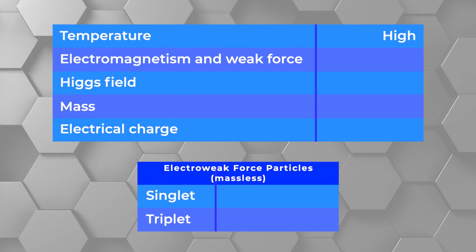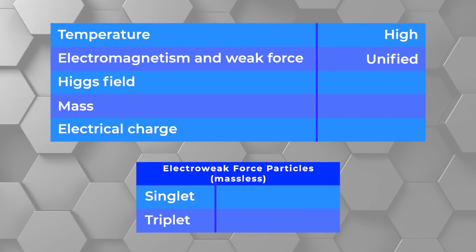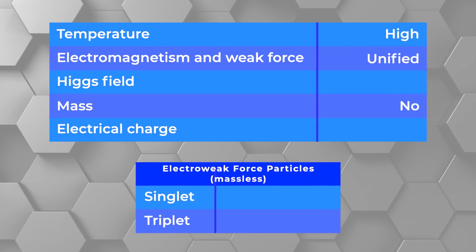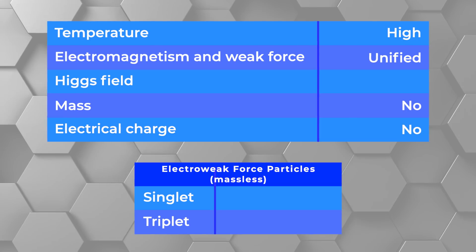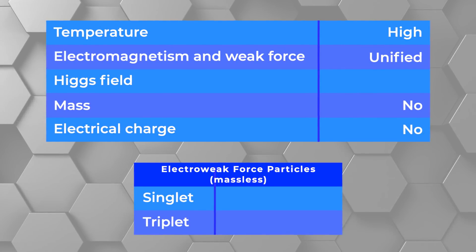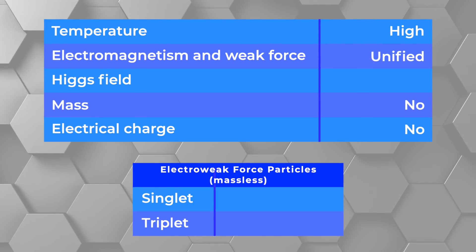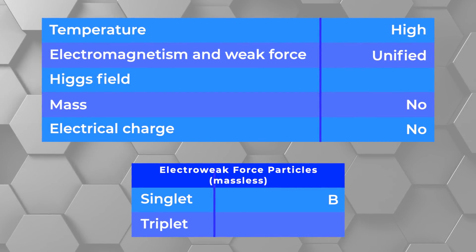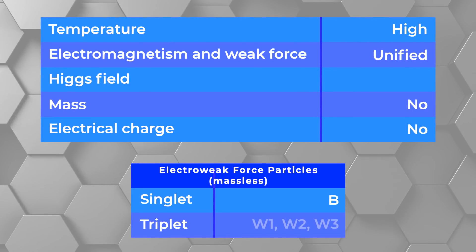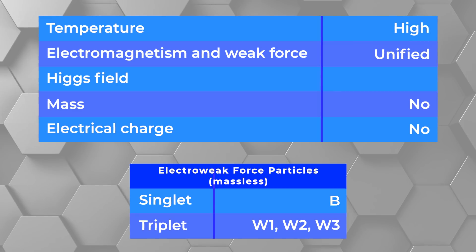Now for the electroweak force. There is a temperature above which the electromagnetic and weak force seem to be the same. Under these circumstances, mass doesn't exist. Even weirder, electrical charge doesn't exist. Instead, the electroweak force has two sets of massless force carrying particles. A single particle called a singlet and which we'll call a B, and a trio of particles called a triplet and which can be called W1, W2, and W3. These are the particles of the electroweak force.